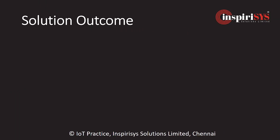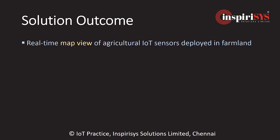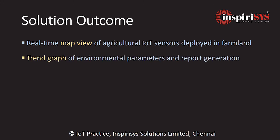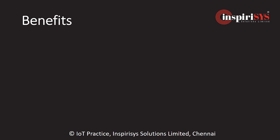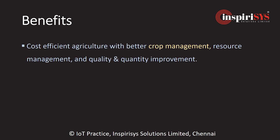The solution outcomes include a real-time map view, trend plots of IOT sensors across the field, identification of plant disease, and pesticide suggestions using image processing and machine learning algorithms. This solution helps in better crop monitoring to maximize yield and alert farmers in case of abnormalities.